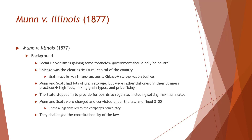Justice Miller in the majority said there were no substantive protections in due process — but this was not the end. A few years later in Davidson v. New Orleans, he wrote: 'It is not a little remarkable that while due process has been in the Constitution as a restraint upon the authority of the federal government for nearly a century, its powers had rarely been invoked. But while it has been a part of the Constitution as a restraint on the power of the states only a very few years, the docket of this court is crowded with cases in which we are asked to hold that state courts and state legislatures have deprived their citizens of life, liberty, and property without due process.'